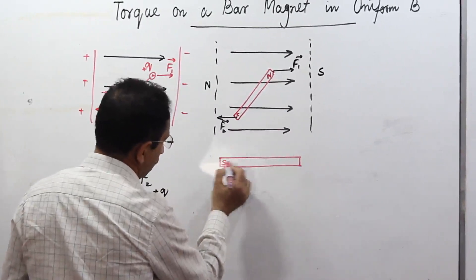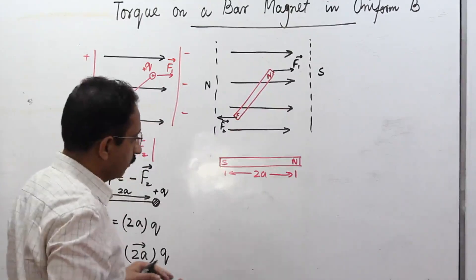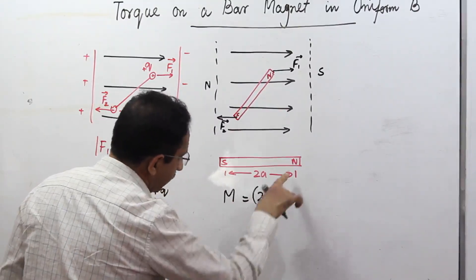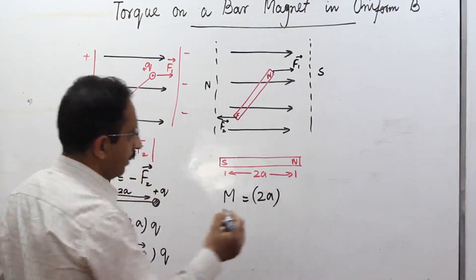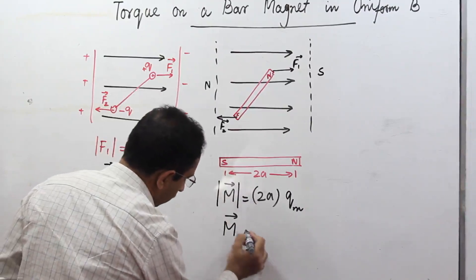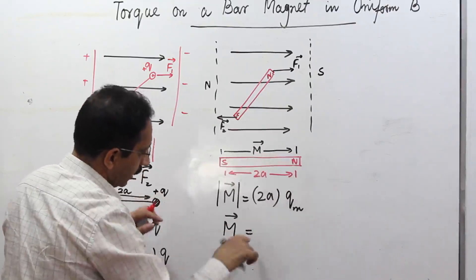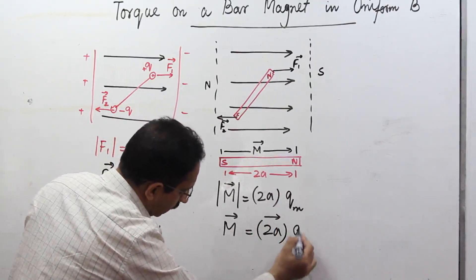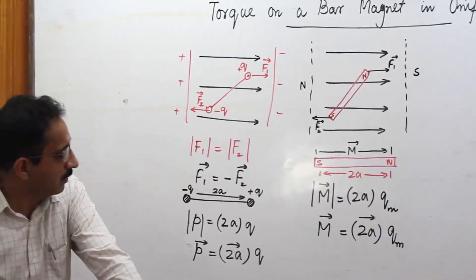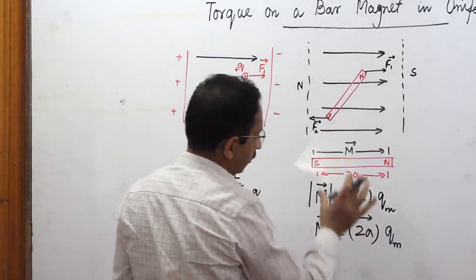Similarly, for a bar magnet we define the magnetic dipole moment. This is the bar magnet — south pole and north pole — separated by a distance 2a, which is also called the magnetic length. I define the magnetic dipole moment M as 2a multiplied by the pole strength qm. This is a vector quantity directed from the south pole towards the north pole.